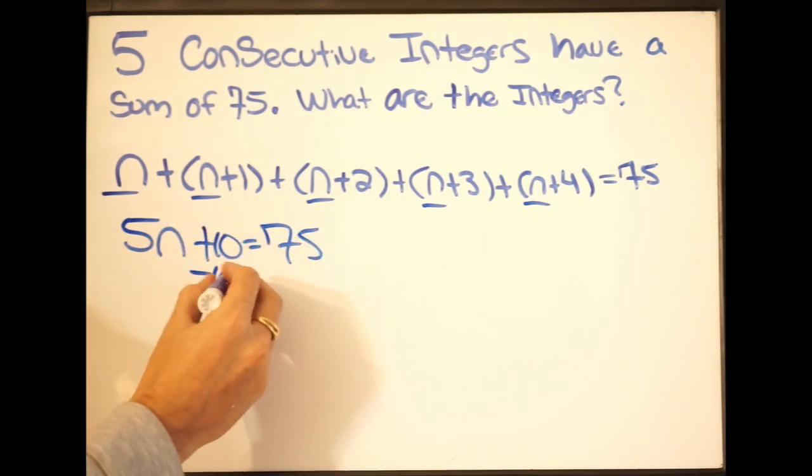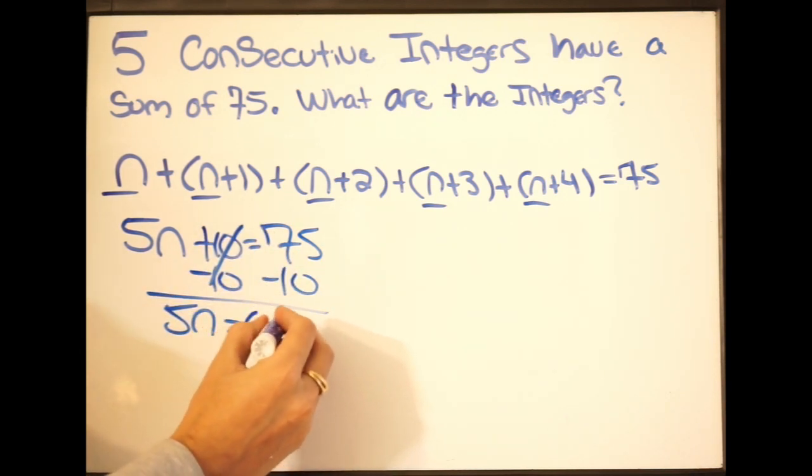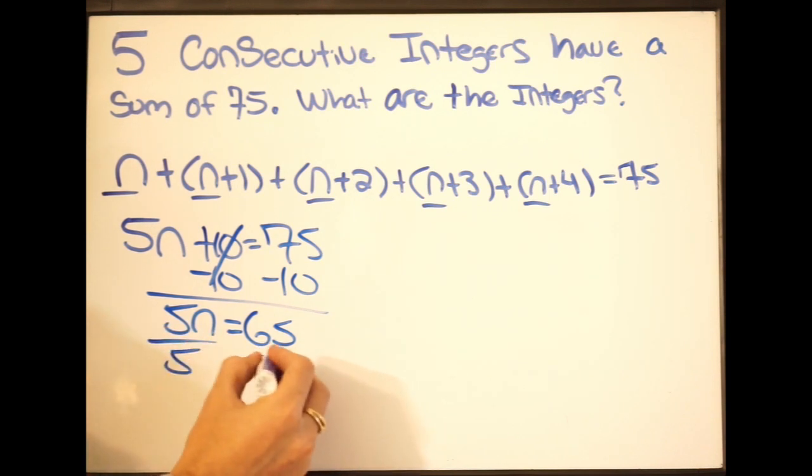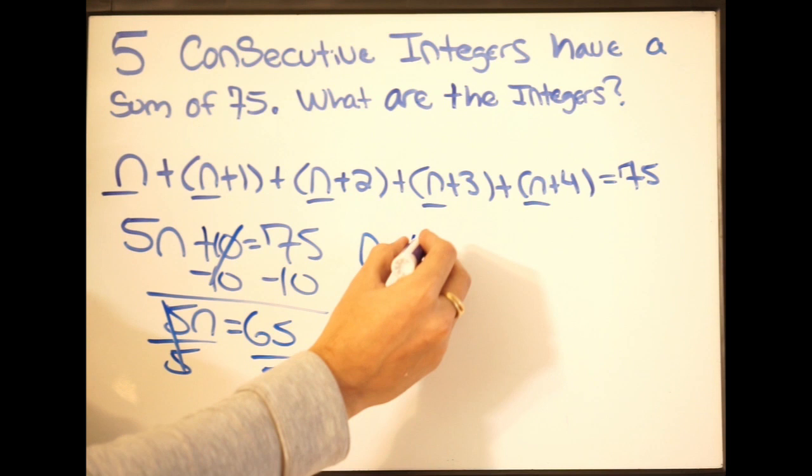Equal to 75, so we want to minus 10 on both sides. So we get 5n is going to be equal to 65, and then divide both sides by 5. So we can see here that n is equal to 13.